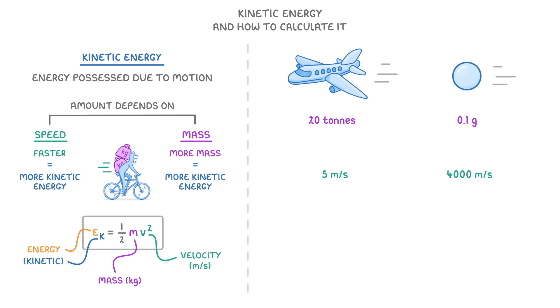So we have to change 20 tons to 20,000 kilos, as there are 1,000 kilos in each tonne, and we need to divide 0.1 grams by 1,000 to get 0.0001 kilos.